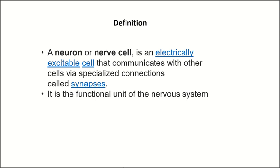There are four main ideas to know. First, the neuron is a nerve cell — we are talking about only one cell. This cell is electrically excitable and communicates with other cells via synapses, which we'll explain later. Finally, this cell is the functional unit of the nervous system.